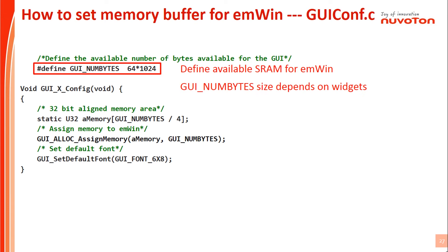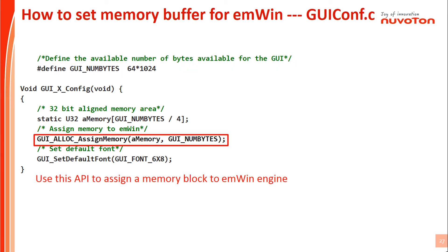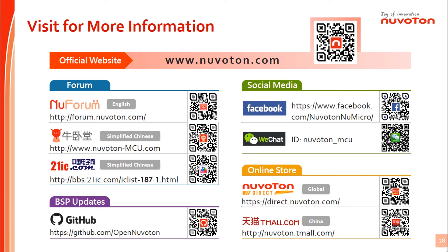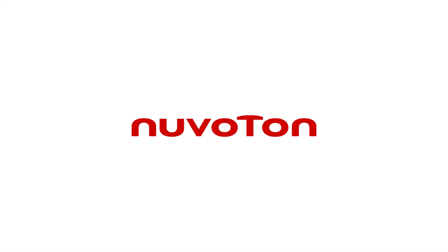In the GUIConfig.c file, we need to set some parameters as well. If you would like to know more about Nuvoton, you can go to the Nuvoton official website at www.nuvoton.com. If you have any problems in development or want more technical content, you can go to Nuvoton and 21IC, or go to the Nuvoton official Facebook fan page to get the latest Nuvoton product information. To buy the development board or a variety of tools and ICs, you can go to Nuvoton Direct. The latest BSP package and software tools can be downloaded on the Nuvoton GitHub.